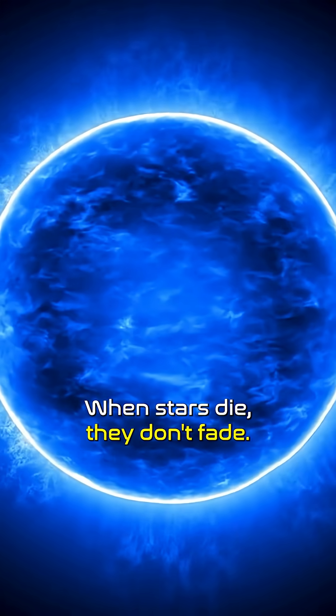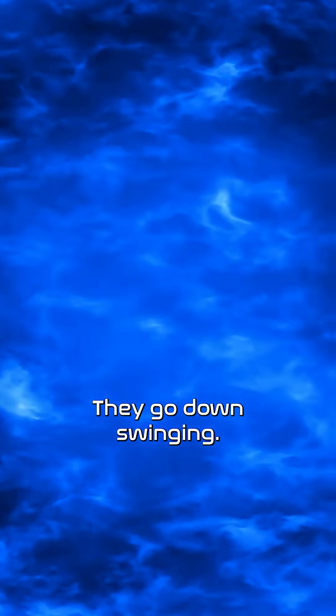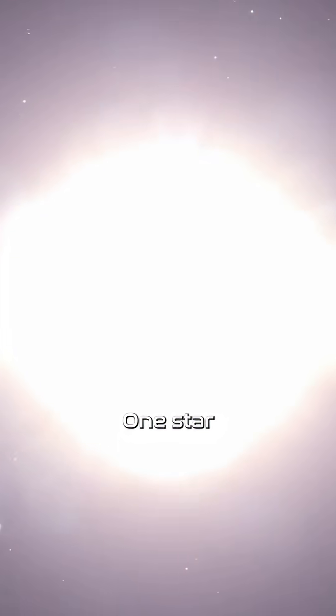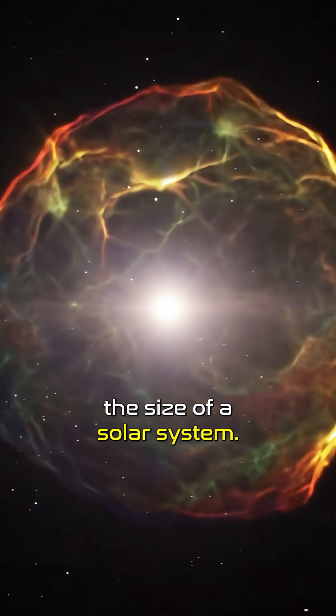When stars die, they don't fade. They go down swinging. A supernova. One star turning into an atomic bomb the size of a solar system.